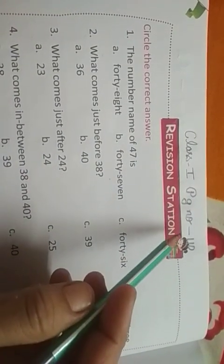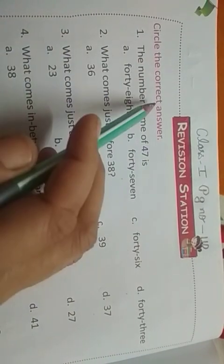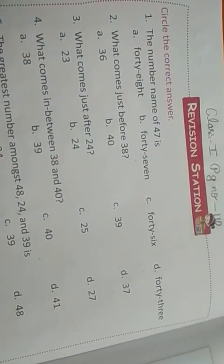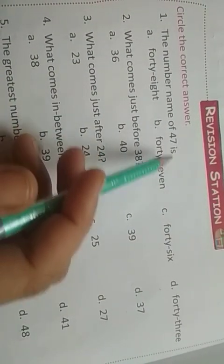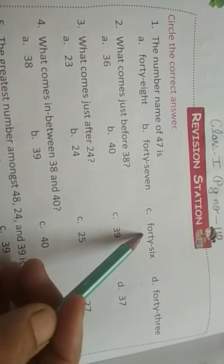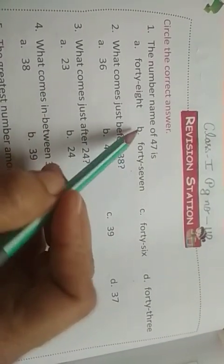Class, first page number 110, revision station. Circle the correct answer. The number name of 47 is: a) 48, b) 47, c) 46, d) 43. So b, 47, is the correct answer.